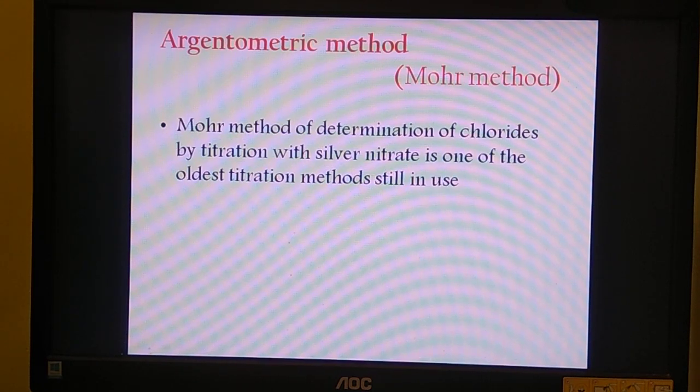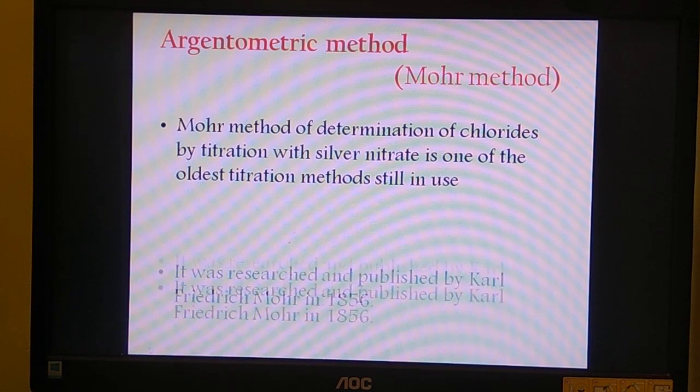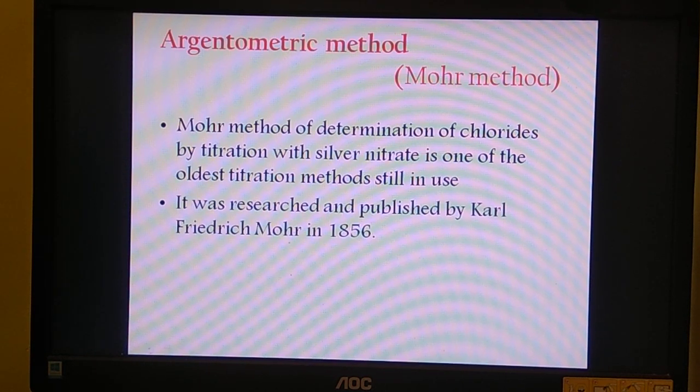Argentometric method or Mohr's method happens to be one of the oldest titration methods still in use for the determination of chloride. It was researched and published by Karl Friedrich Mohr in the year 1856.